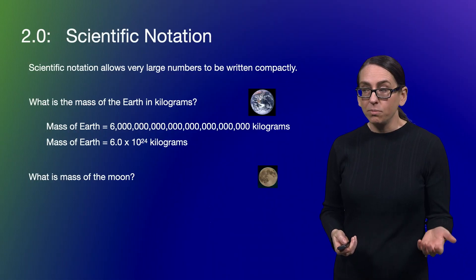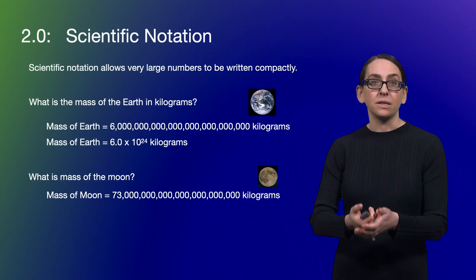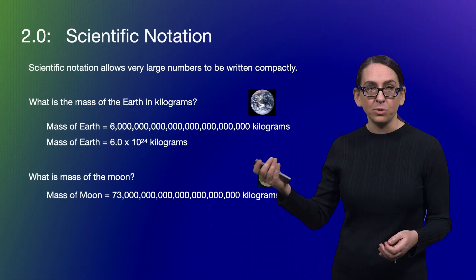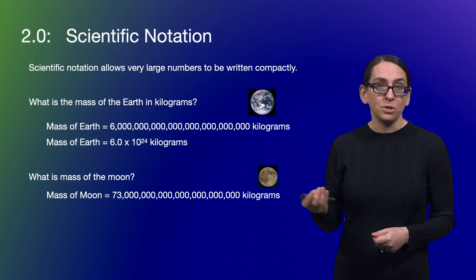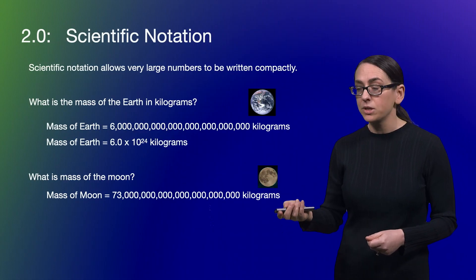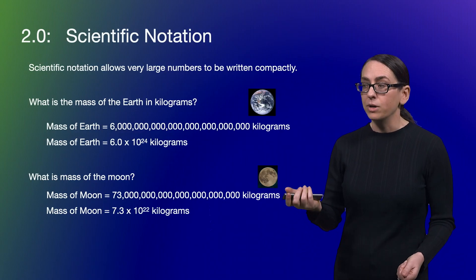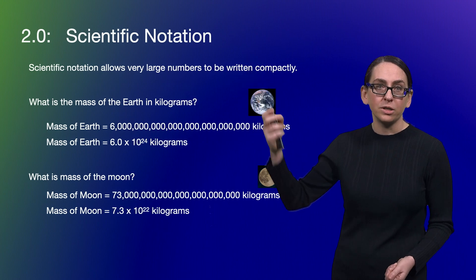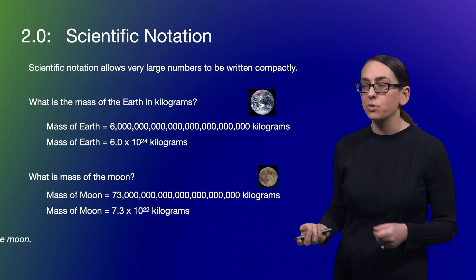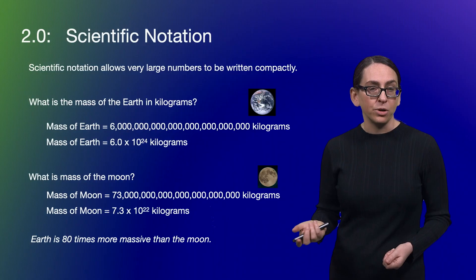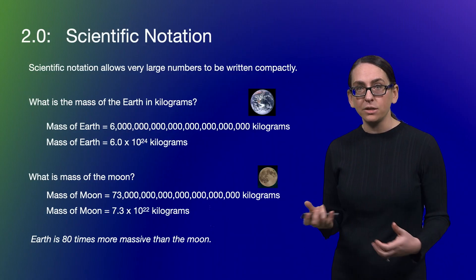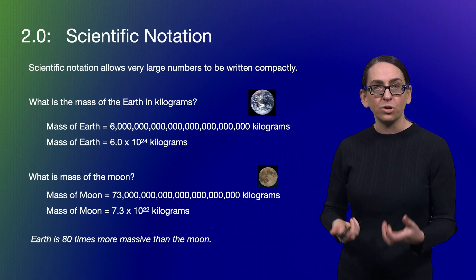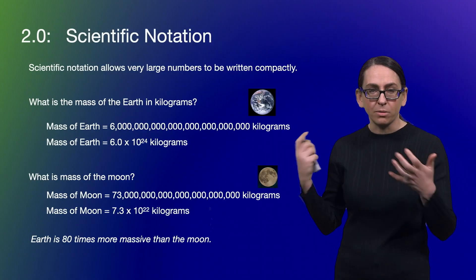For example, the mass of the moon is this number in kilograms. And if you compare those big numbers between Earth and moon, you might almost say that the mass of the moon looks bigger looking at all of those zeros. In scientific notation, it's really quick: 7-point-whatever times 10 to the 22nd kilograms. We see that 24 is bigger than 22, so we quickly know that the mass of Earth is much larger than the mass of the moon. Scientific notation is critical, particularly when talking about rocket science and astrophysics, to write numbers in a way our brain can handle.